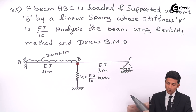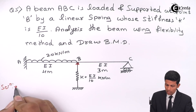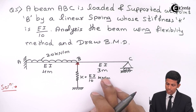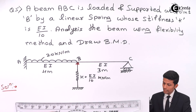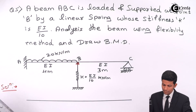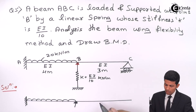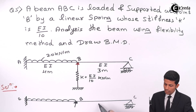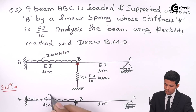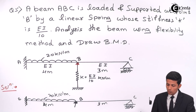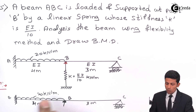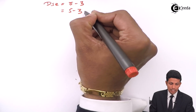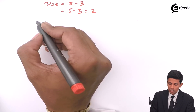To start with the solution, first draw the FBD of this part. We have to check the DSE first. So the first step: checking DSE, which is r minus 3. Here r will be 1, 2, 3, 4, 5 — so 5 minus 3 is equal to 2, meaning we have to remove two supports.